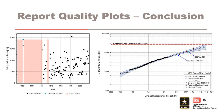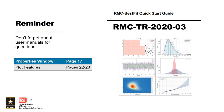Edits can be made by changes to the text and updates to the style, font, size, and color of the annotations. I will end this presentation with a reminder that user manuals and quick start guides are a great reference for any software package that you are working with. Content from this presentation is located in the properties window and plot feature sections of the RMC Best Fit Quick Start Guide. Now let's open it up for questions.